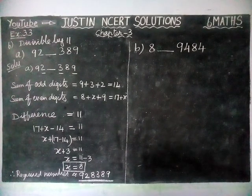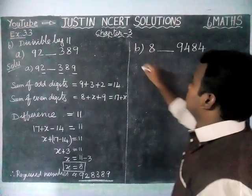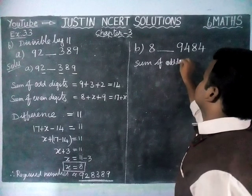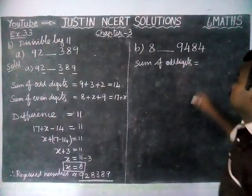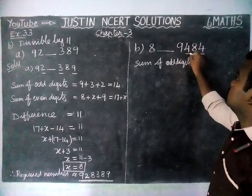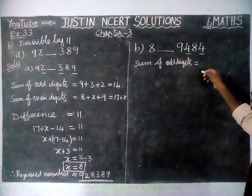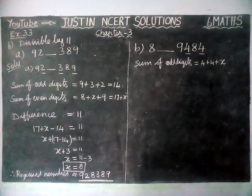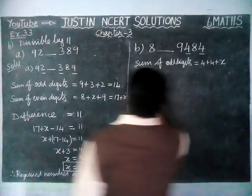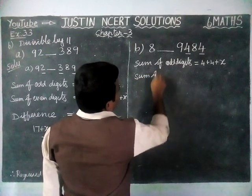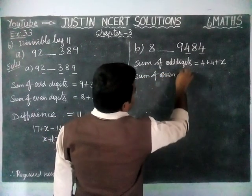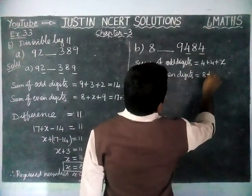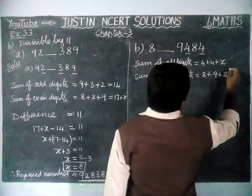Now we are going to solve option B. For option B, the sum of even-position digits: 8 plus 9 plus 8 plus 8 is equal to 33... let me recalculate — 8 plus 8 = 16, 16 plus 9 = 25.